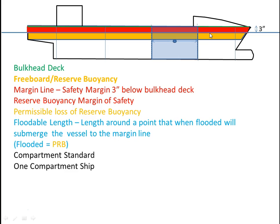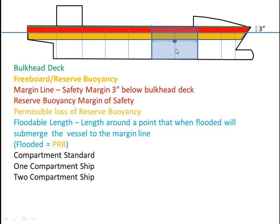If we wanted to make this a two-compartment ship, we would have to divide all these compartments in half — in other words, put more transverse watertight bulkheads in the ship.